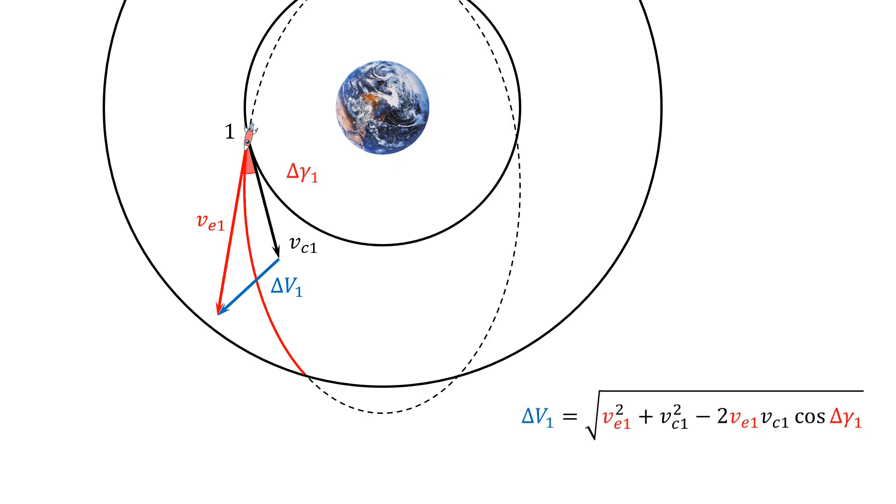Using the law of cosines, delta V1 therefore can be expressed as follows.